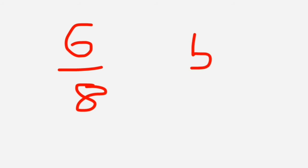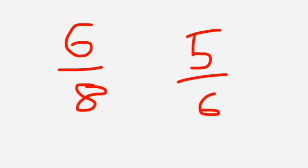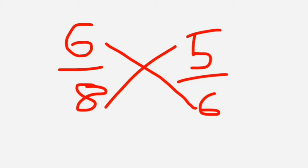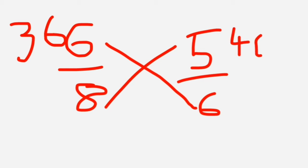The first trick: I'm entering two fractions — 6/8 and 5/6. The question is: which fraction is higher? Just cross multiply — 6 into 6 is 36, and 5 into 8 is 40. Since 36 is less than 40, six-eighths is less than five-sixths. This is the first trick.